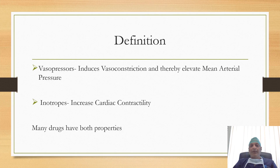By definition, vasopressors are the agents which induce vasoconstriction and thereby they alleviate the mean arterial pressure. While inotropes are the agents which increase cardiac contractivity, thereby they increase the cardiac output.